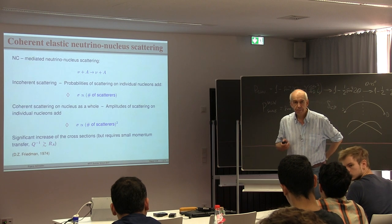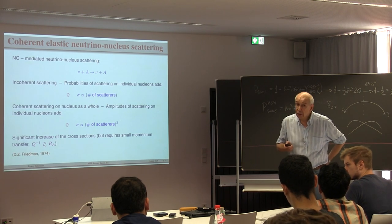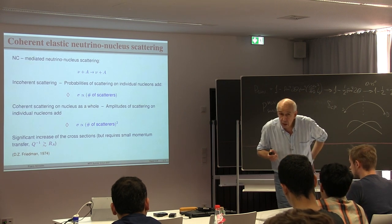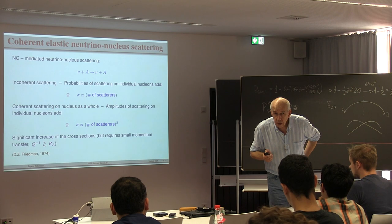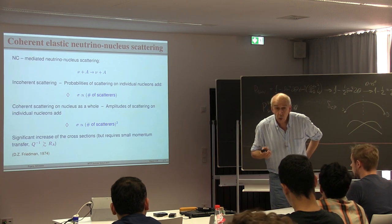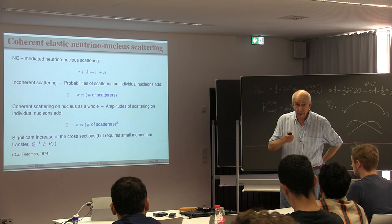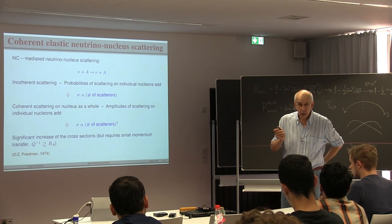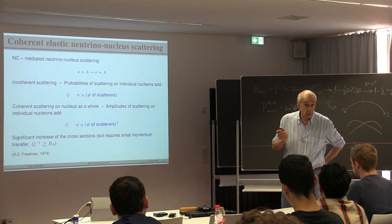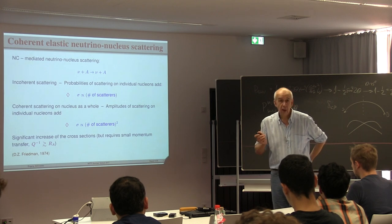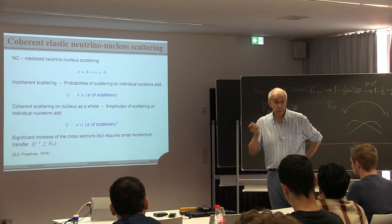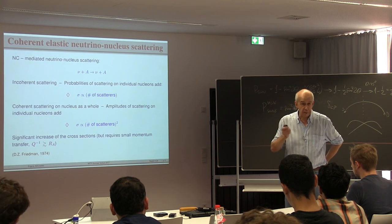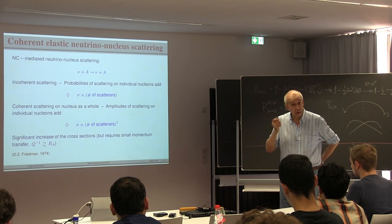This measurement also matters because solar and atmospheric neutrinos produce an irreducible CEνNS signal — the neutrino floor — in dark matter detection experiments. We need to understand this background well, and observing it with neutrinos first provides an important cross-check.